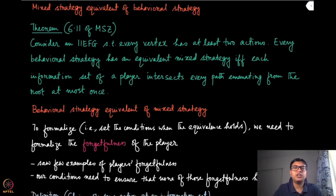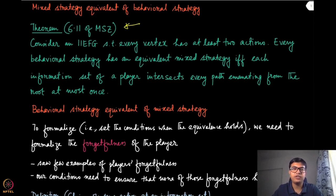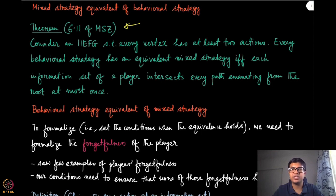We discussed a theorem in the last module which gives us the necessary and sufficient condition for when we can have a mixed strategy equivalent of a behavioral strategy. That theorem states that the behavioral strategy has an equivalent mixed strategy if and only if each information set for that player intersects with every path starting from the root at most once — ruling out situations like the same information set intersecting the same path multiple times, as we saw in the example representing forgetfulness.